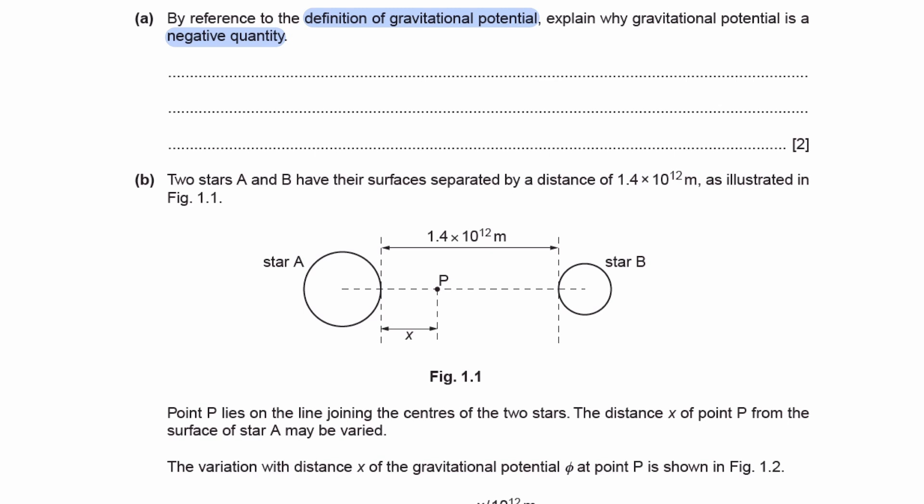Similarly, if you have a mass that is very far away from the surface of the Earth and you let it fall towards Earth, the same thing occurs. Gravitational potential energy will decrease and kinetic energy will increase. And gravitational potential will also decrease, because gravitational potential is essentially GPE divided by mass. So as you drop a mass towards the surface of the Earth, both gravitational potential and potential energy will decrease.